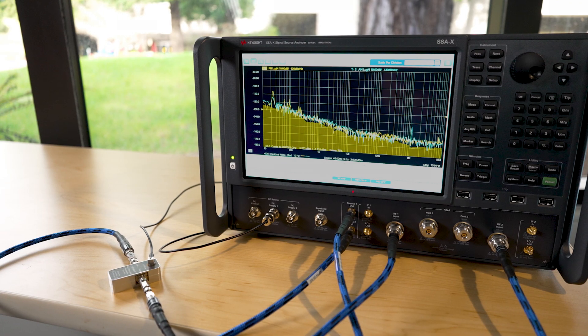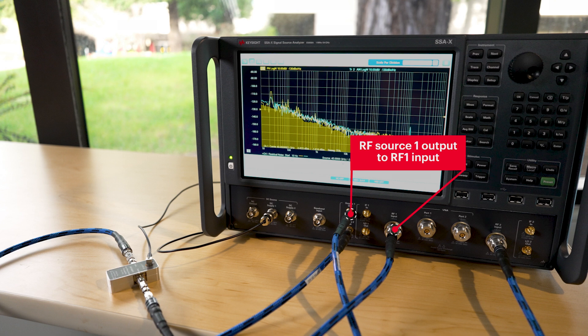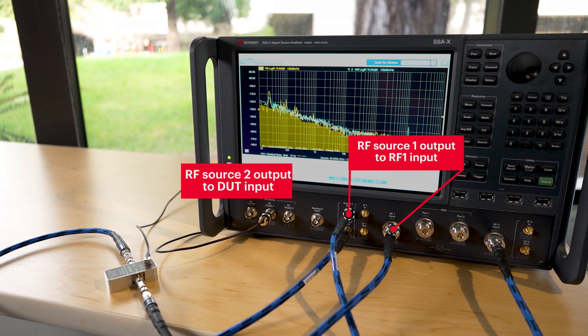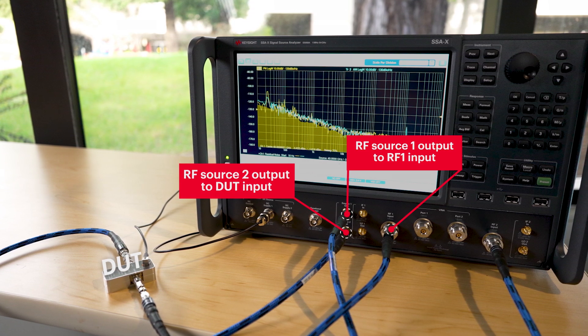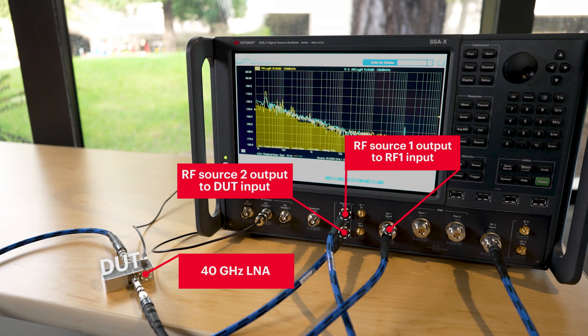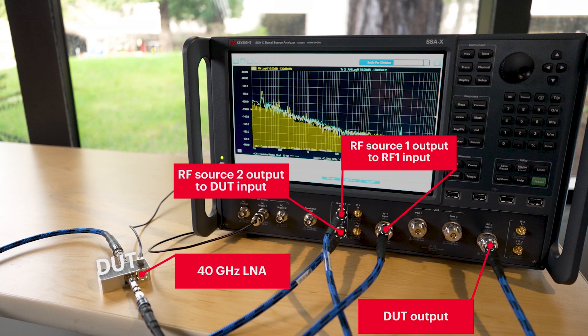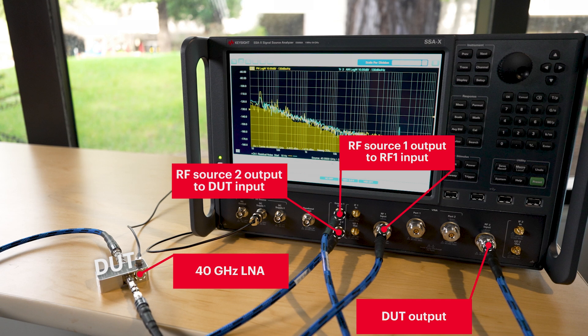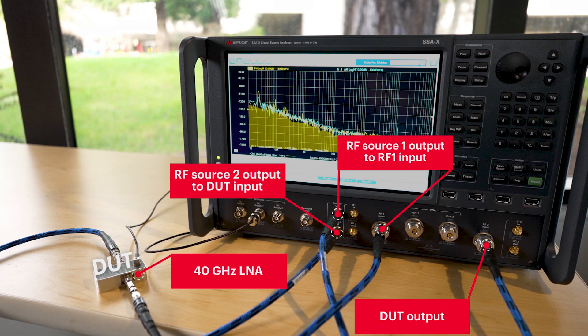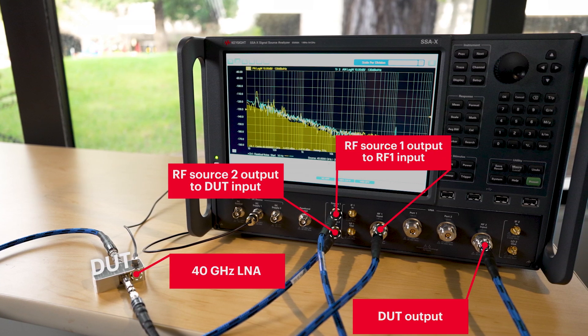One of the RF stimulus source outputs goes into receiver one and the other RF stimulus output goes into our DUT input, which is a 40 gigahertz LNA. The output of the LNA goes into receiver two to complete the setup. There are no external components required, making this an extremely easy setup.